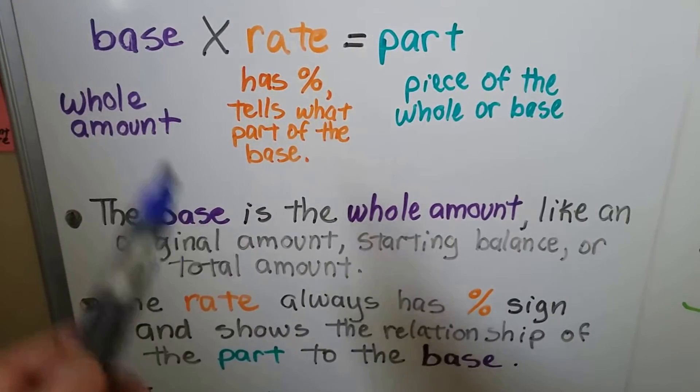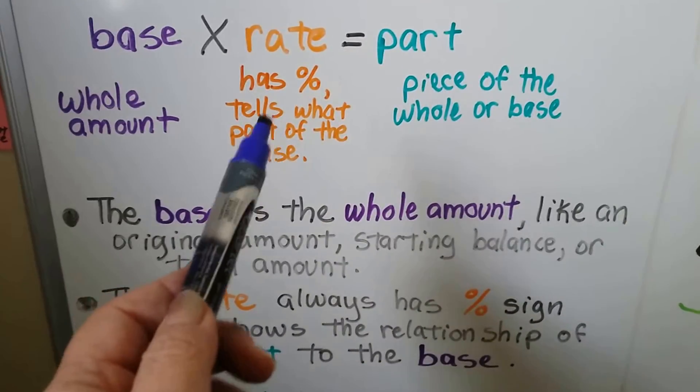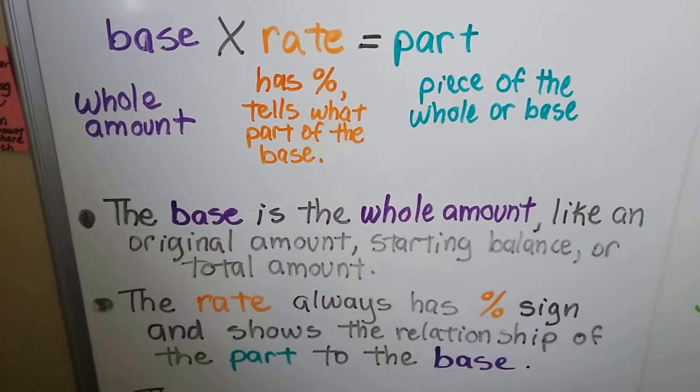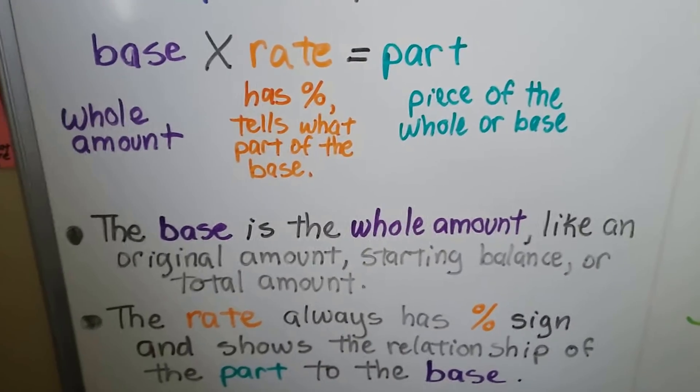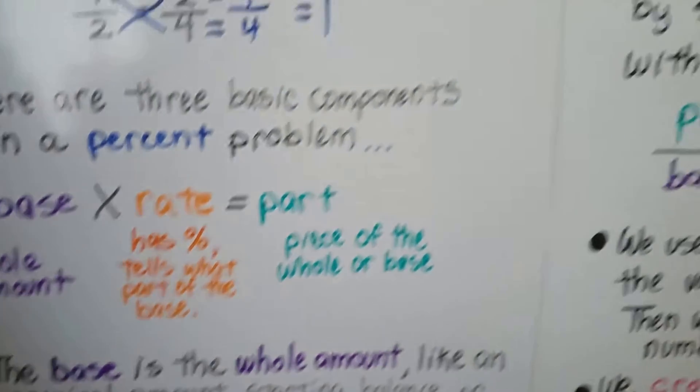So the base is the whole amount. It's like an original amount, the starting balance or a total amount that you're beginning with. The rate always has a percentage sign and shows the relationship of the part to the base, and then the part is just a piece of that whole or base. This is the percentage, that's the original amount, that's the percentage, and that's the piece of the original amount. I know it can be confusing, but stick with me and you'll figure this out.